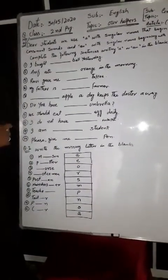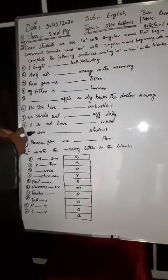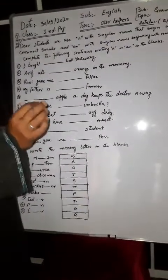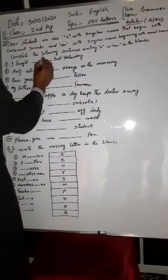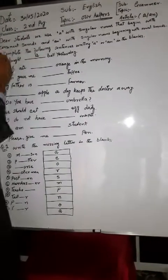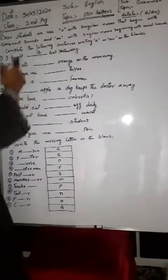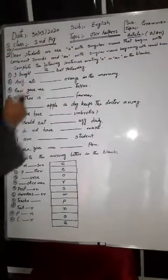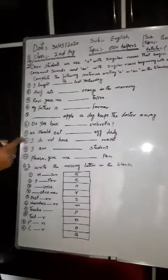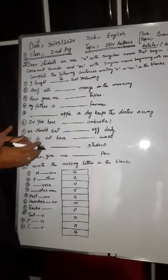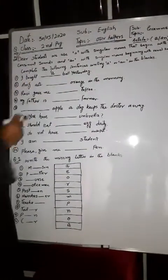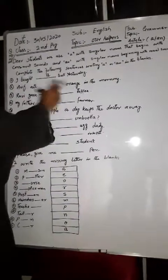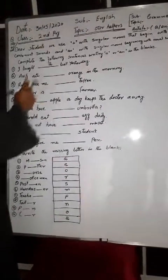I bought a ball yesterday. Ball, what is ball? Ball - in this the word is ball. 'A ball' because ball starts with 'b', a consonant. Are you listening? Orange in the morning. It looks like 'an orange' - orange is what? Orange starts with 'o', a vowel sound.